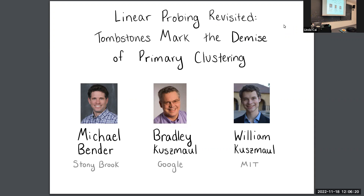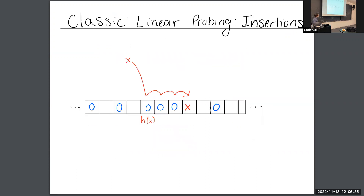This talk is about a paper that appeared in FOCS '21. What we do in this paper is revisit maybe one of the oldest and most widely used data structures in computer science: the linear probing hash table. I'm going to first tell you about the classic data structure and how it works, and then show you some new results that I think have the potential to change how we think about this problem.